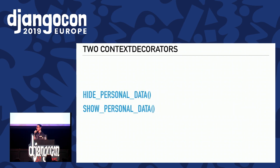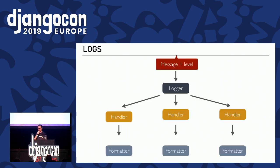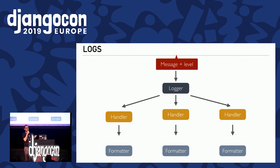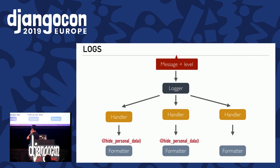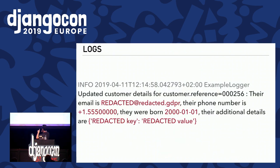To help with all of that, I have two context decorators — they're both decorators and context managers at the same time: hide_personal_data and show_personal_data, and we can nest them. For logging: I have a message, a level, I give it to my Python logger object, which has several handlers — a handler can log to a file, console, or send an email. I add a formatter. When I don't want to show personal data, I use a decorator on the formatter; if for some reason I want to show personal data, I use the other decorator. This is how I obtain a nicely redacted log.